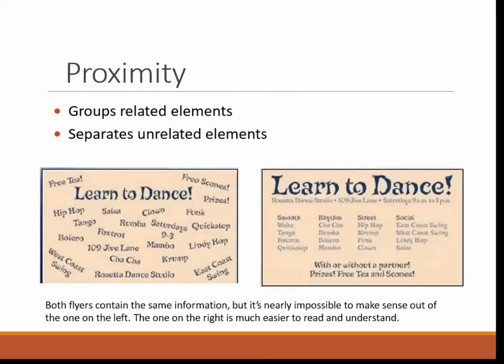Proximity groups related elements and separates unrelated elements. Here we have two flyers containing the same information, but you can see how much more difficult it is to read and make sense of the flyer on the left — none of the information is arranged in a way that makes sense to the reader. The flyer on the right clearly shows what is happening, when, and where. The different types of dance are grouped into categories and additional information is shown at the bottom. We have all four elements — contrast, repetition, alignment, and proximity — working together.